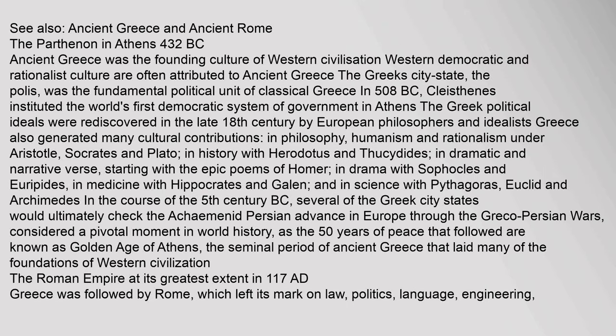Classical Antiquity: Ancient Greece was the founding culture of Western civilization. Western democratic and rationalist culture are often attributed to Ancient Greece. The Greek city-state, the polis, was the fundamental political unit of classical Greece. In 508 BC, Cleisthenes instituted the world's first democratic system of government in Athens. Greece also generated many cultural contributions: in philosophy, humanism and rationalism under Aristotle, Socrates and Plato; in history with Herodotus and Thucydides; in dramatic and narrative verse, starting with the epic poems of Homer; in drama with Sophocles and Euripides; in medicine with Hippocrates and Galen; and in science with Pythagoras, Euclid, and Archimedes.